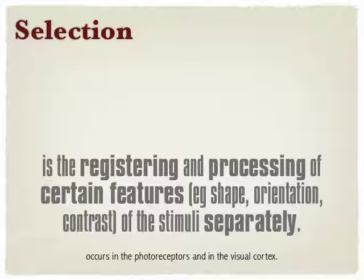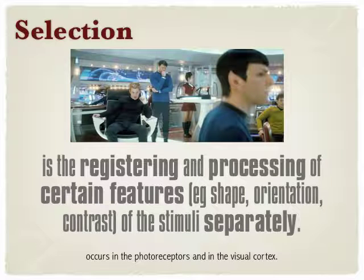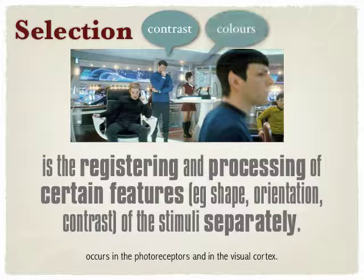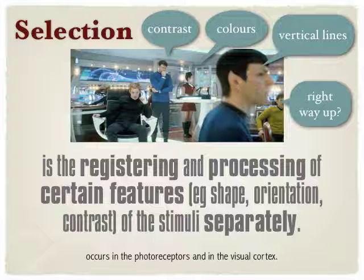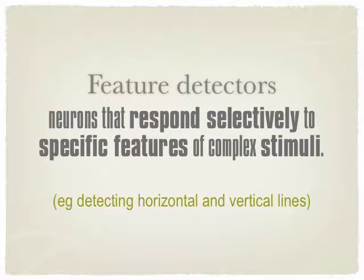In the visual cortex we then have selection. We have parts of the brain that only pay attention to certain features — one pays attention to different contrasts, another looks after colour, another handles orientation, another detects different lines like vertical lines. Selection can also occur in the eye itself, in the photoreceptors, because some photoreceptors only pay attention to vertical or horizontal lines. In the visual cortex we have very specialised sections called feature detectors.